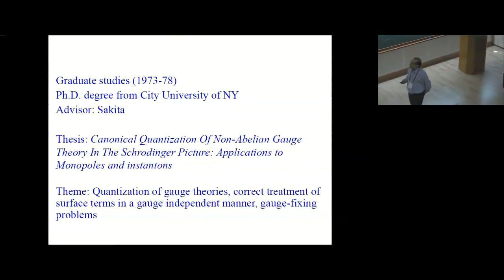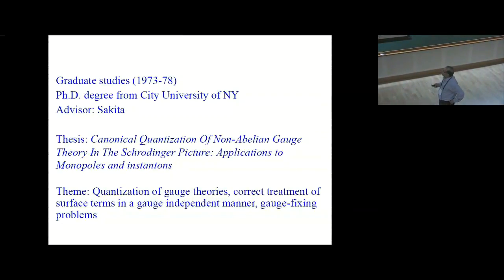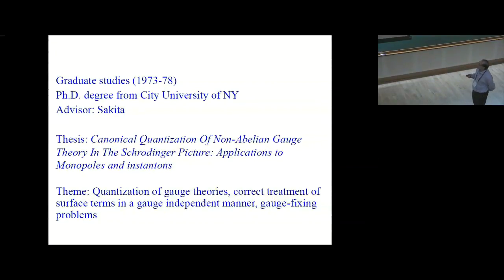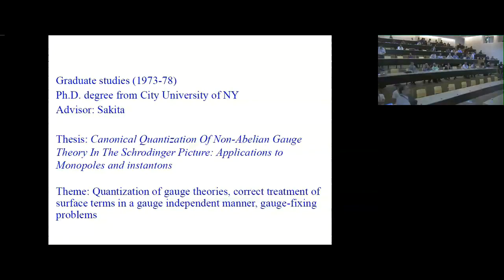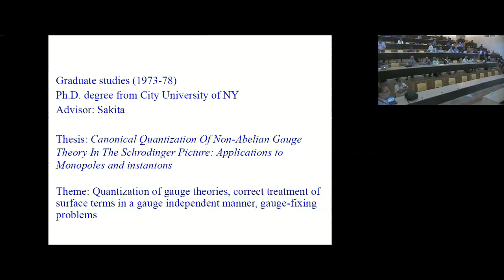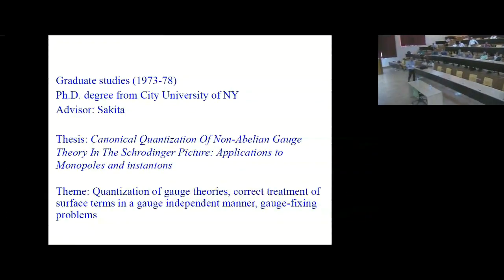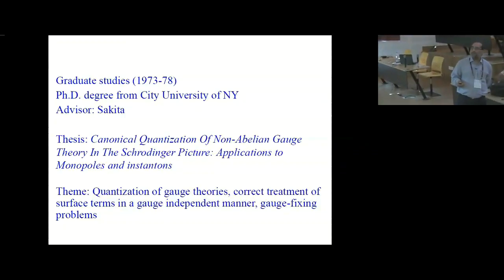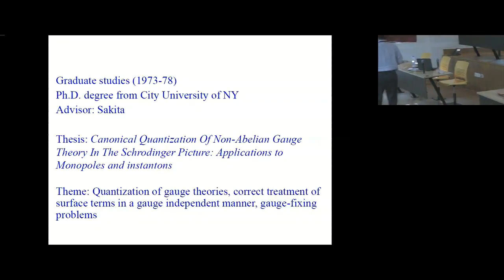Spenta started his graduate studies in New York at the City College under the guidance of Bunji Sakita. He spent five years there between 1973 and 1978 and wrote a thesis on canonical quantization of non-abelian gauge theory in the Schrödinger picture, with applications to monopoles and instantons. The basic themes he worked on during this period were quantization of gauge theories, correct treatment of surface terms in a gauge-independent manner, and gauge fixing problems.